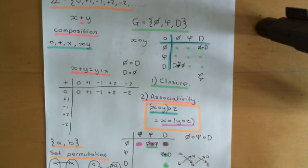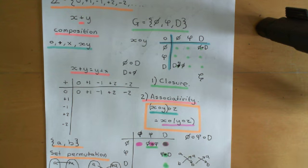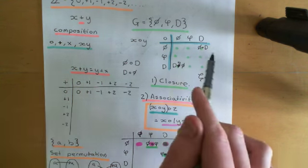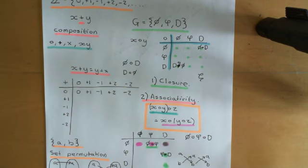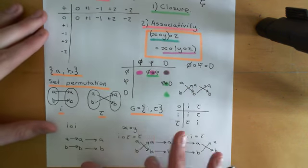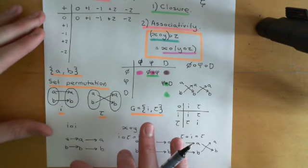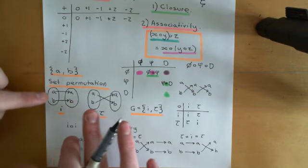That is not trivial at all when you think in terms of an abstract composition table. I've told you how you can create a composition law that actually obeys associativity, because it's not easy. If you just make up the entries, you will not end up with a composition law that obeys associativity. A way to do it is by thinking of the elements of your group as representing permutations of some set.